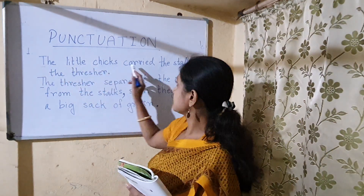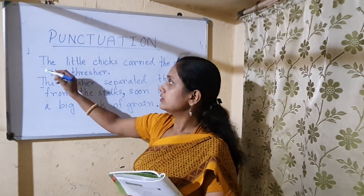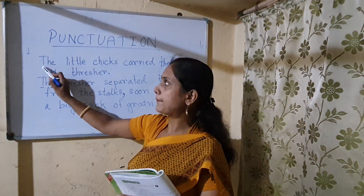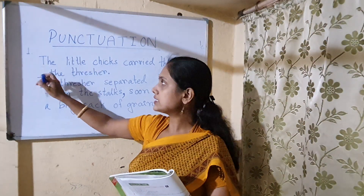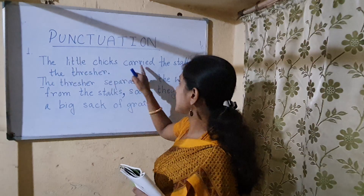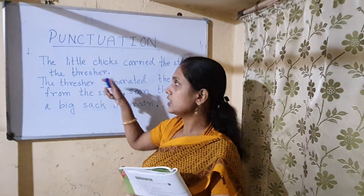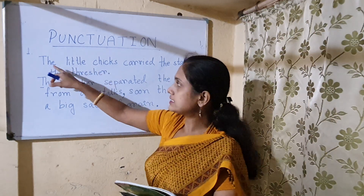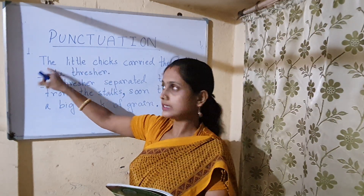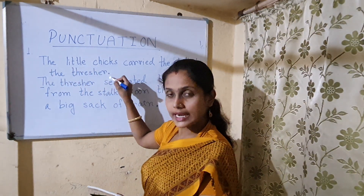The little chicks carried the stalks to the thresher. Here the first letter T is capital. The sentence is ending here, so you have to put a full stop. In your book, the first T is not given in capital — it is given in small. You will write capital letter. And here you have to put a full stop because the sentence is ending here.